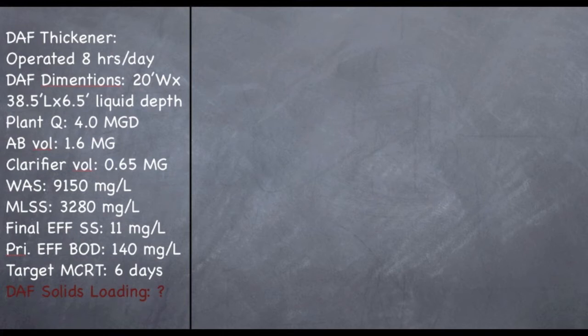So, let's go ahead and start to solve this. Step one, we are going to find out how many solids are in our secondary system. So, what I've done is I've taken the aeration basin volume and the clarifier volume, combined them, and the combined two is 2.25 MG in the secondary system, times 8.34, times 3,280, which is our mixed liquor concentration. And that'll give us 61,549 pounds of mixed liquor in the secondary system.